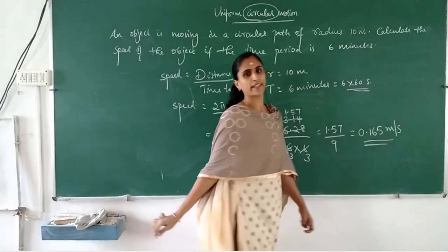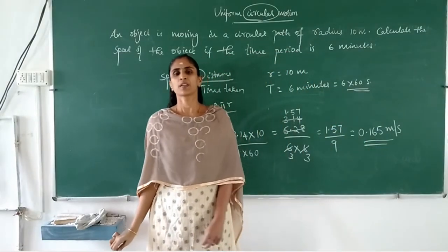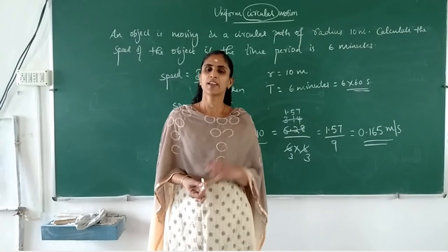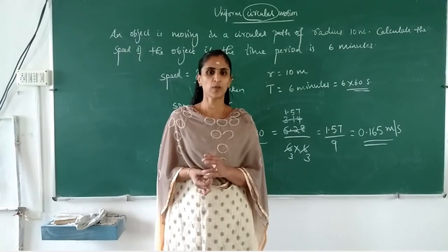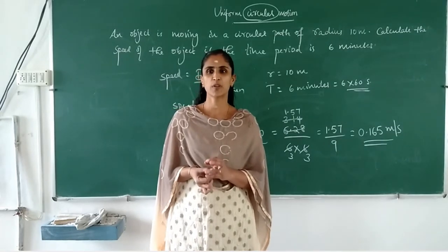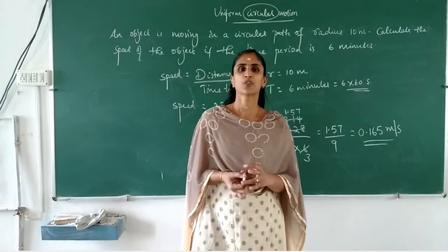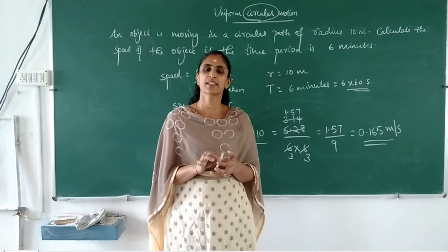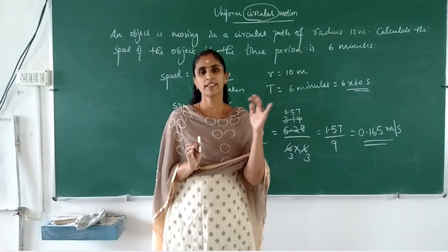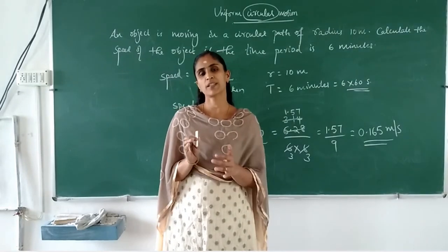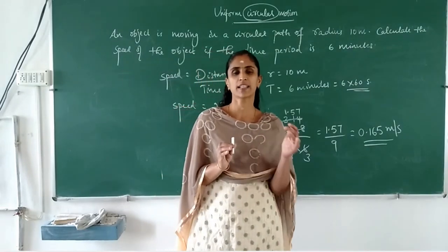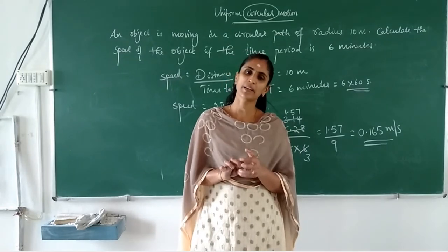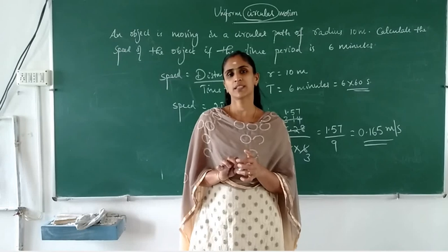So that chapter is finished. Today we discussed about uniform circular motion. From the term itself you can define it: an object is moving in a circular path covering equal distances in equal intervals of time, or by keeping speed constant.